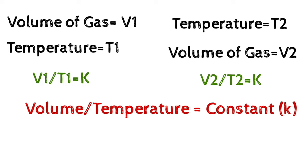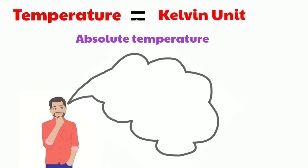So that means we can write that V1 by T1 equals V2 by T2. This is the mathematical formula. Here the temperature we are talking about is in Kelvin unit. We can call it absolute temperature.